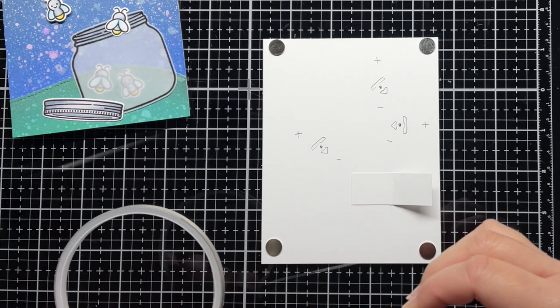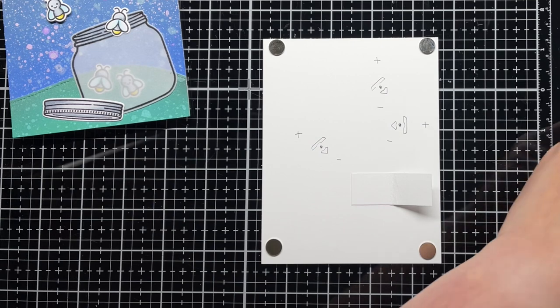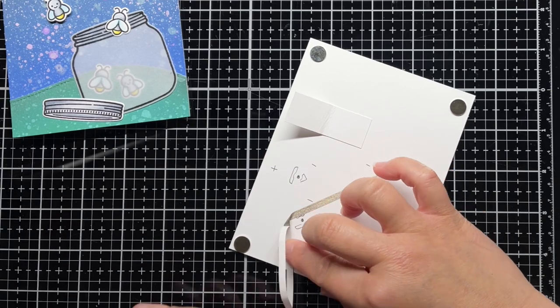Now it's time to add my conductive fabric tape, starting with the negative side. I start from the opposite end of the battery holder and then run the tape along the negative point of each traced outline, connecting the three points.